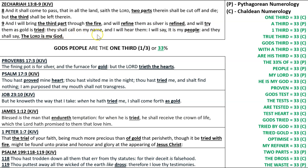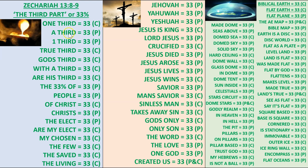'They shall call on my name, and I will hear them. I will say, It is my people, and they shall say, The Lord is my God.' Words and phrases associated with these two verses, in regard to God's third or 33%, are found to equal 33 in Pythagorean and Chaldean numerology.